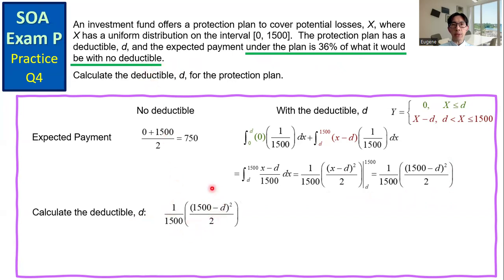So we have the expression with the deductible equals 36% times the expected payment without deductible, 750. Solve for the value of D.